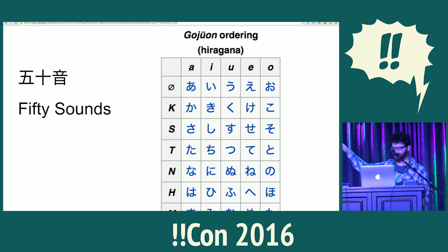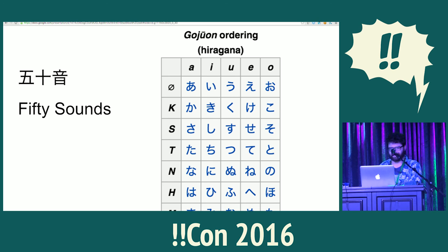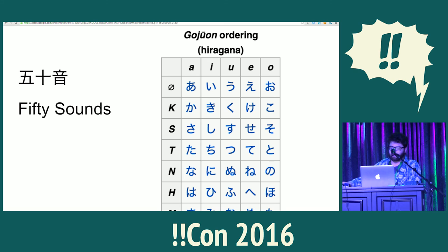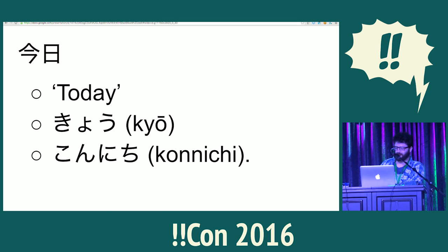Starting at the top left corner and working your way down, you go: a, i, u, e, o, ka, ki, ku, ke, ko, sa, si, su, se, so — and so on down the chart. The ordering is defined for the phonetic alphabets, but not for kanji directly. The symbols can still be ordered this way, but their order depends on the pronunciation of the word as if it were written in hiragana or katakana. The problem is that kanji symbols can have many different pronunciations that only a human can detect. For example, the kanji representing the word 'today' can be pronounced either 'kiyo' or 'konichi', and it depends on the context of where the word is used. Thus, the way for these symbols to be alphabetically ordered depends on the context as well.